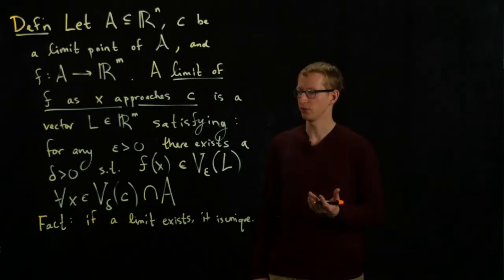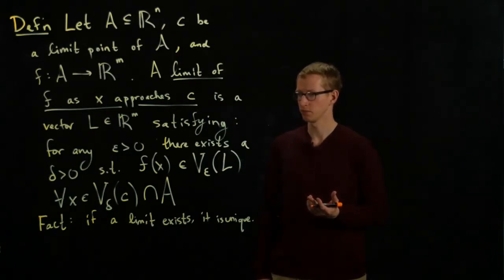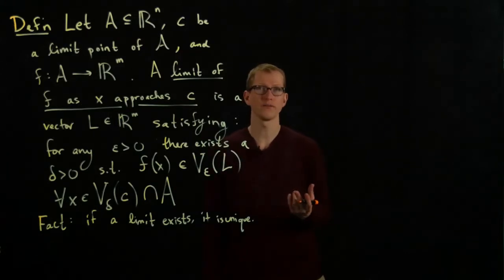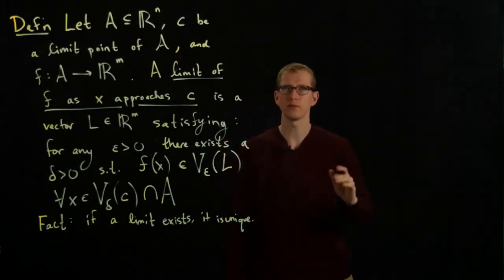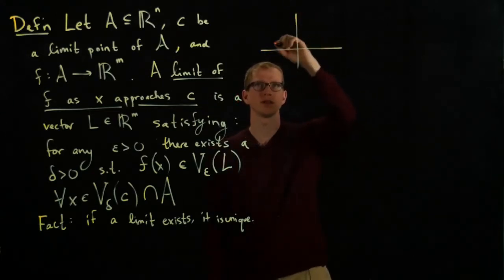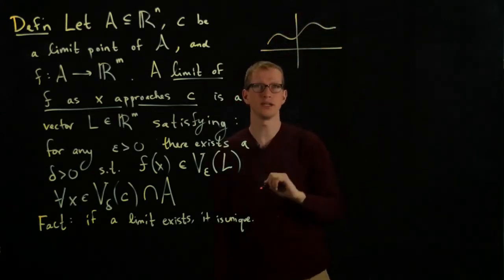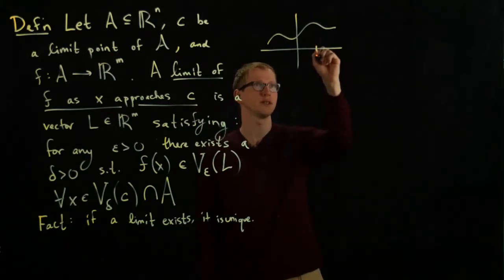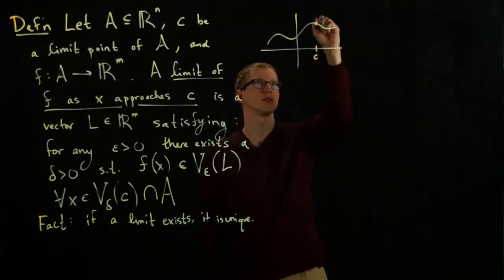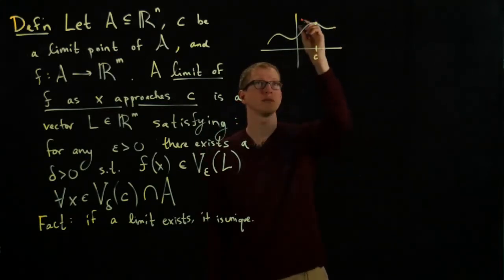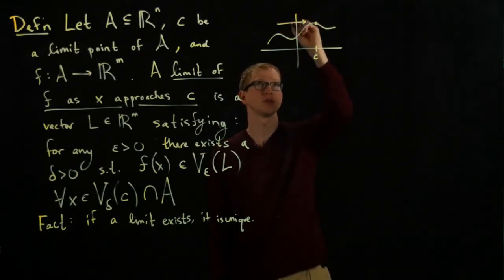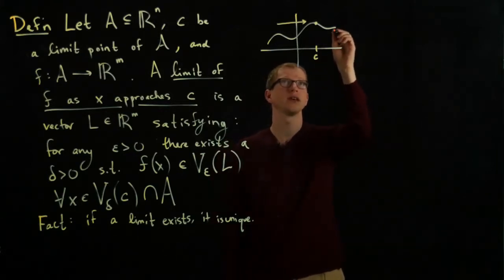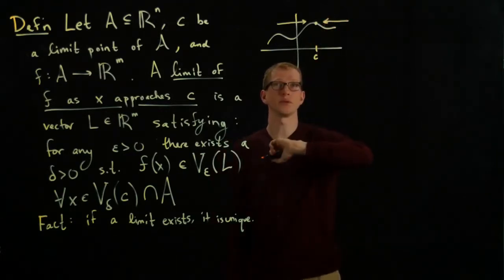Now, one other question we could ask is, related to the notion of, in the case of ordinary variables, we could make sense of limits from the left and limits from the right. If we had a function such as this arbitrary one here, and I pick the point C, such as this one, it makes sense to talk about the limit of this function as I approach from the left, as I approach C from the left, and as I approach C from the right.